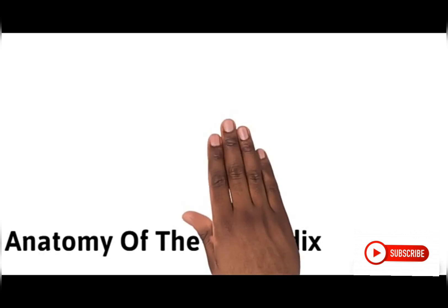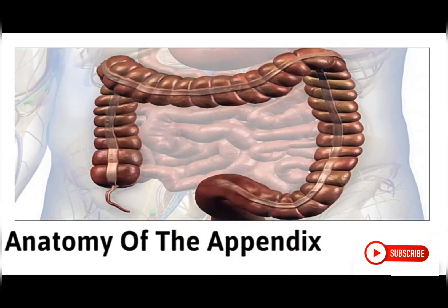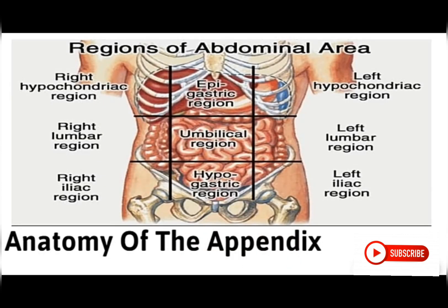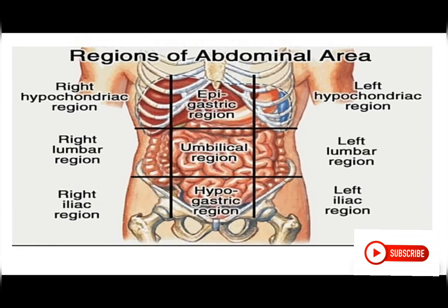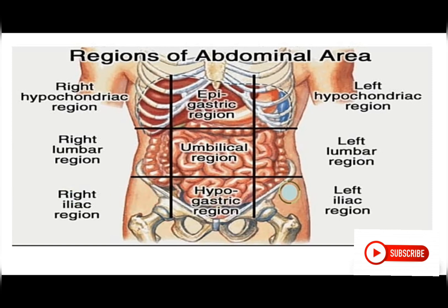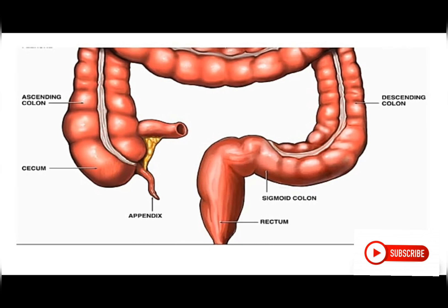When we look at the abdomen, it is divided into nine regions: the right hypochondriac region, the epigastric region, the left hypochondriac region, the right lumbar region, the umbilical region, the left lumbar region, the right iliac fossa, the hypogastric region, and the left iliac fossa. Our concentration here is on the right iliac fossa.